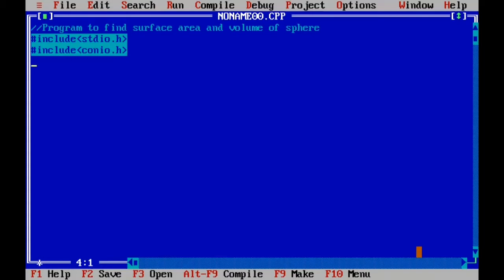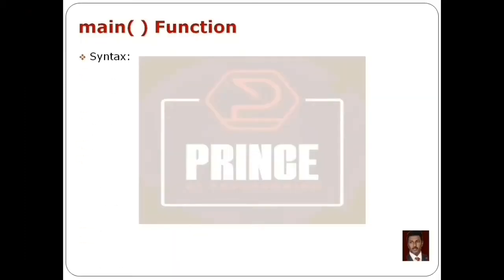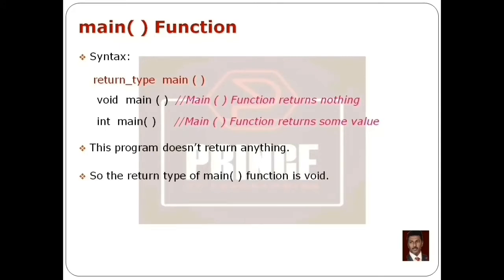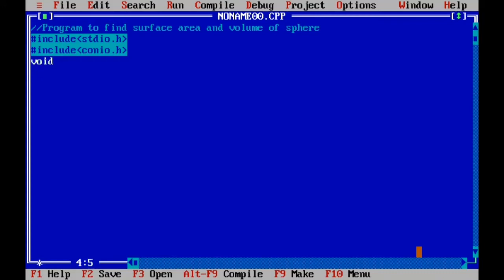The next section is the Main Function. The C program is written inside the main function. We write the return type followed by the main keyword. If the main function returns nothing, we use the empty data type void. Otherwise, we can use any return data type. We open the main function body with a left curly brace.